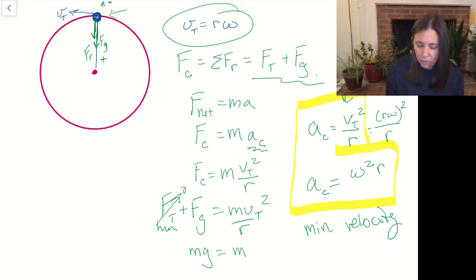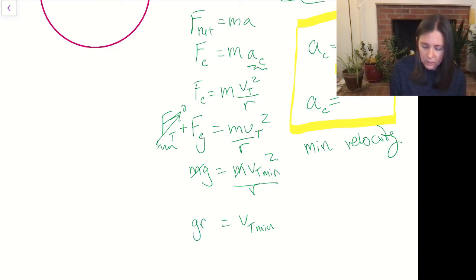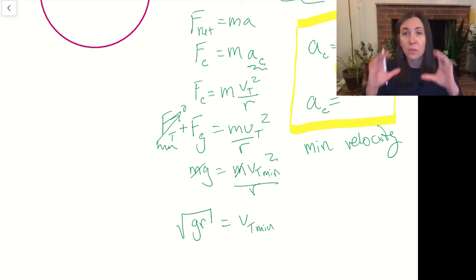Force of gravity is just mg. So our tangential minimum velocity squared over the radius, we can then cancel our masses, solve for the tangential velocity, and we get this minimum velocity for a ball going around a circle is the square root of the gravitational field strength times the radius of that circle.